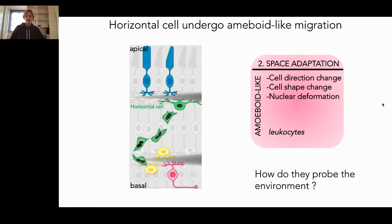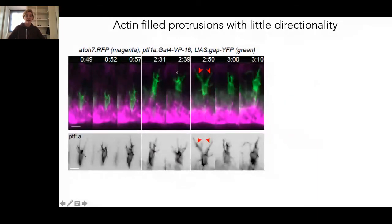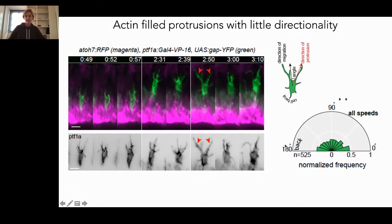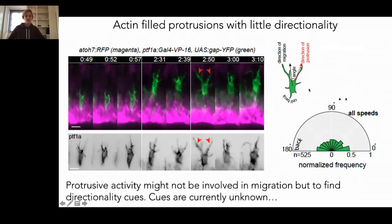How do these cells probe the environment? We don't have final answers, but we have indications. We have these actin-filled protrusions that are thrown in different directions. However, during the longest time of migration the direction of migration and the direction of these protrusions do not always correlate. There's no correlation between protrusion direction and migration speed across all cells. Sometimes they also throw two protrusions simultaneously. So we think that the protrusive activity might not be directly involved in the migration itself, but more in finding directional cues — although at this point we do not yet know what those cues are.